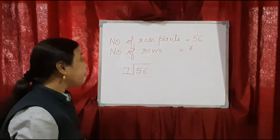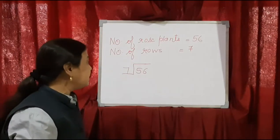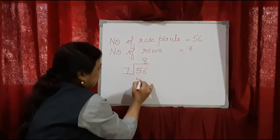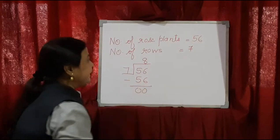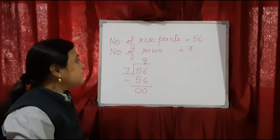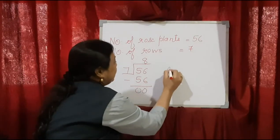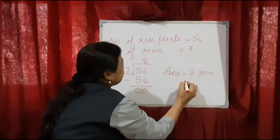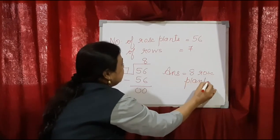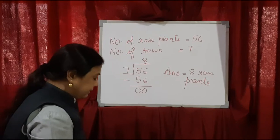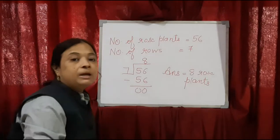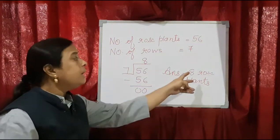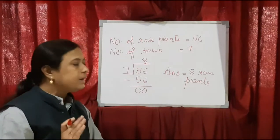Now when we say the table of 7, when 56 comes in the 7 times table — 7 eights are 56. So children, in one row, how many rose plants are there? 8 rose plants. So here we write down the answer: 8 rose plants.